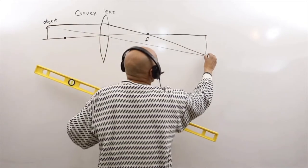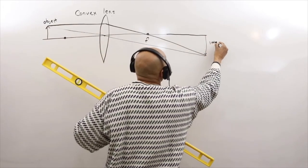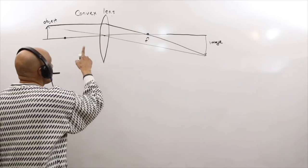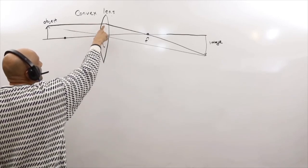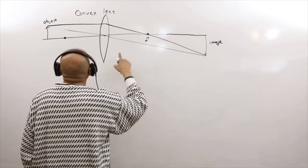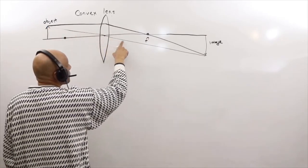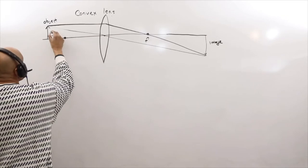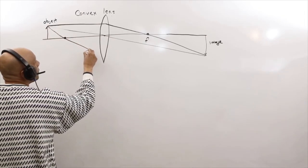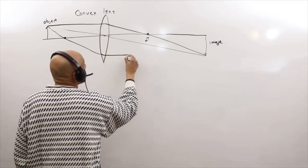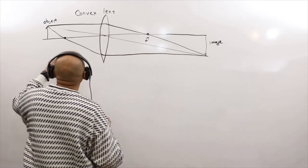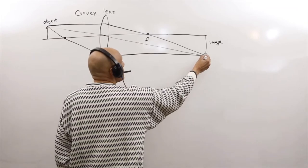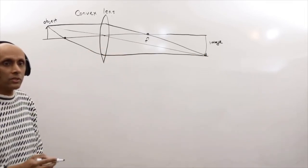Here is our image. One light ray coming parallel to the principal axis gets diverted through the focus and comes out. Another light ray goes through the center. A third light ray goes to the focus on this side and then goes straight across parallel. Remember, light rays going through the focus come out parallel to the principal axis. All three light rays converge here.